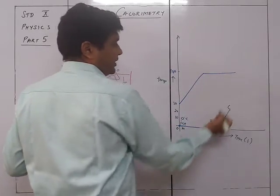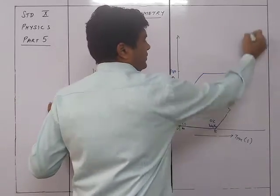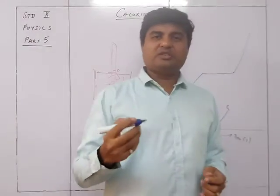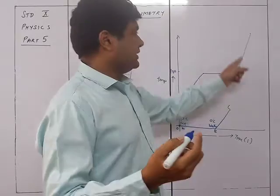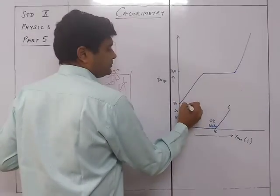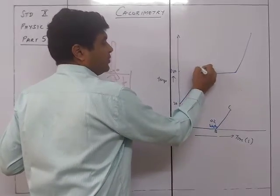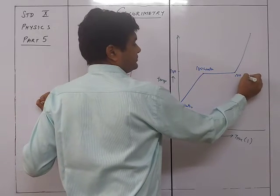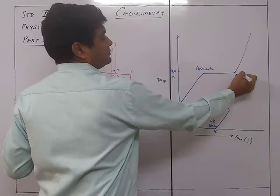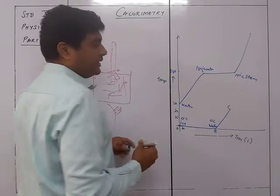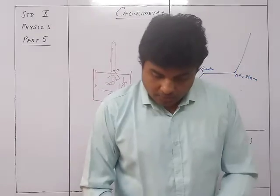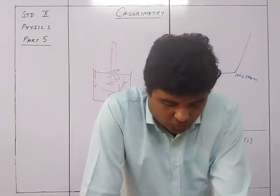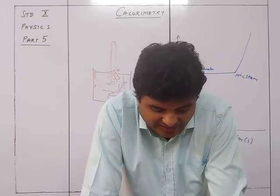On the heating curve of water, from say 30 degrees, the temperature rises and then flattens out at 100 degrees, and then continues upward. So the graph shows 30 degrees water, then 100 degrees water, then 100 degrees steam.